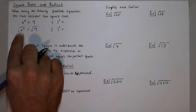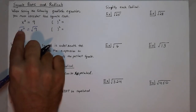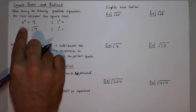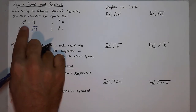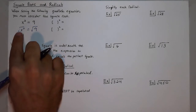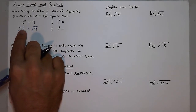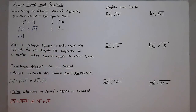Because any x I plug in will be squared, which makes it positive, and then the square root gets rid of that squaring process. So if I plugged in negative 1, it would make it positive 1, and the square root makes it 1 — a positive number no matter what.